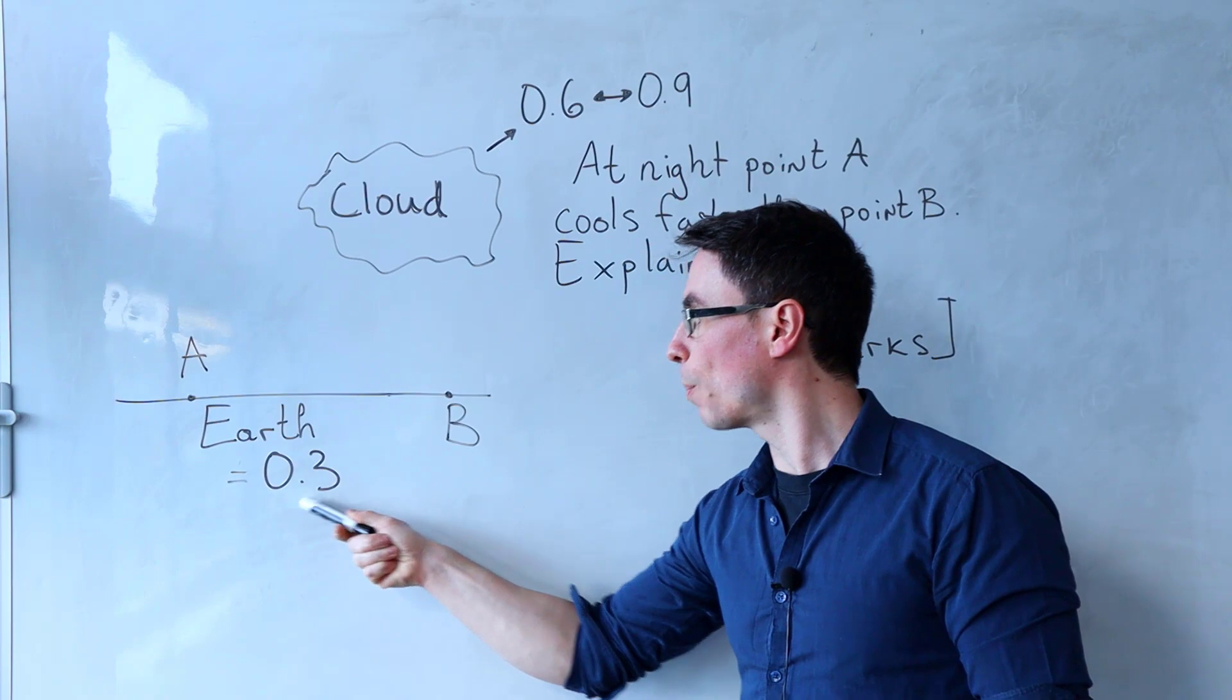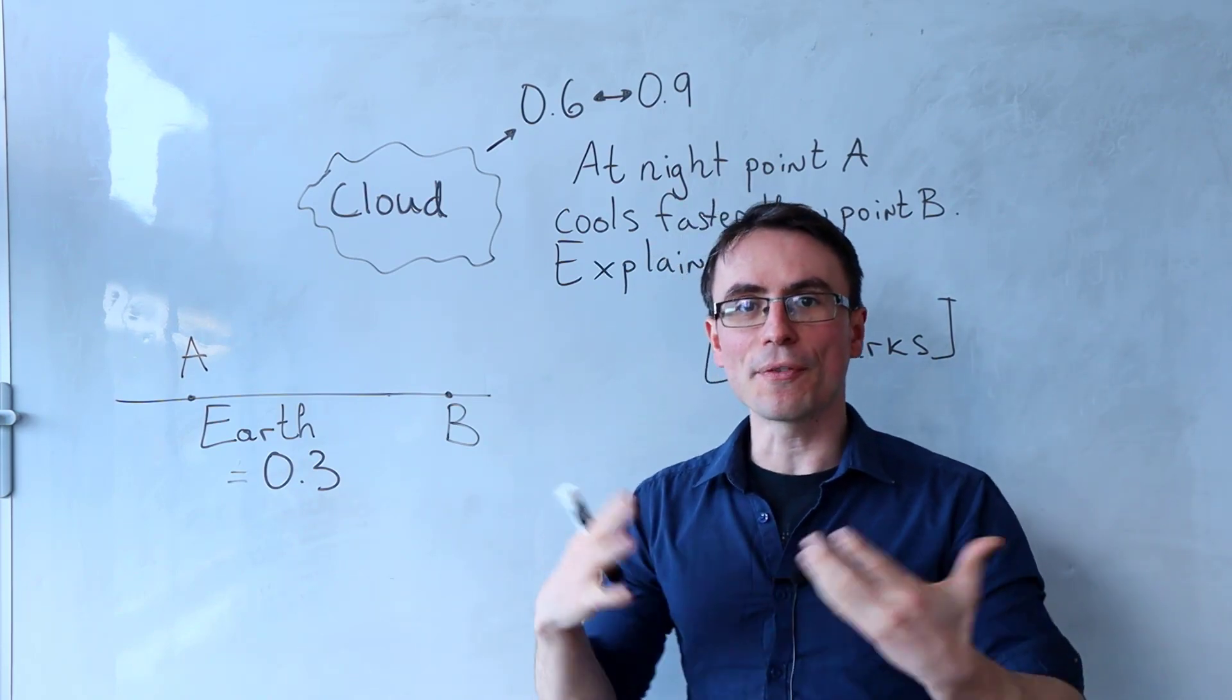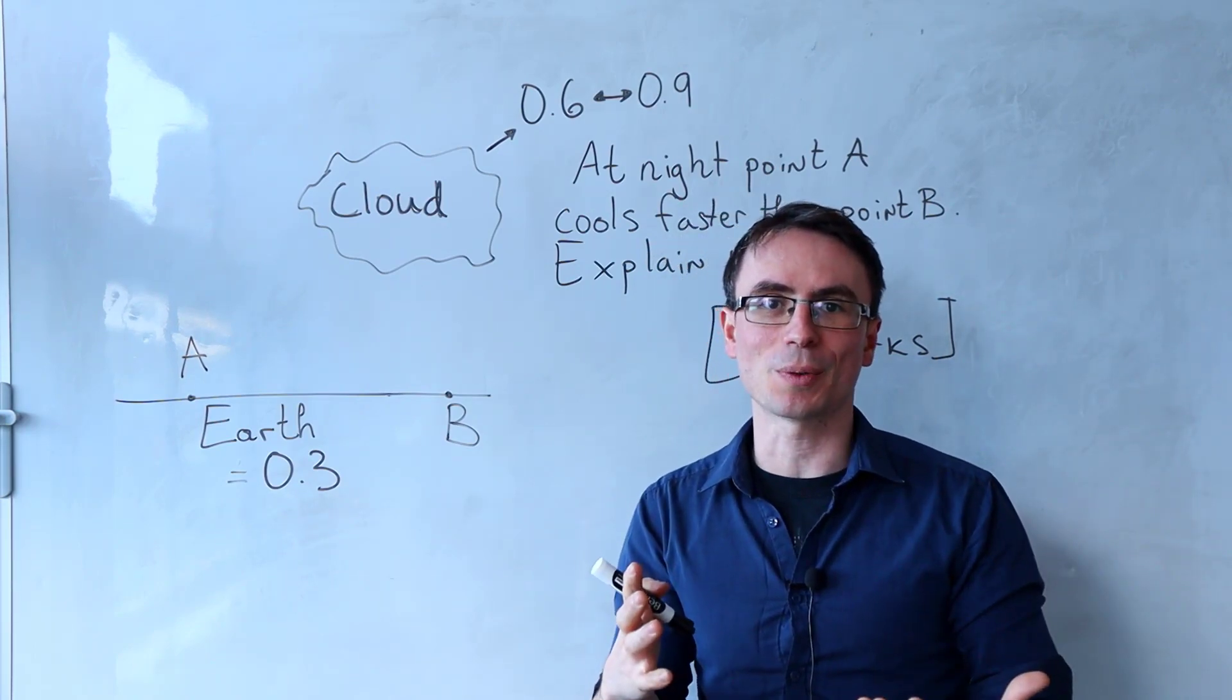The Earth has an albedo number of 0.3, meaning that it reflects around 30% of the incident radiation.